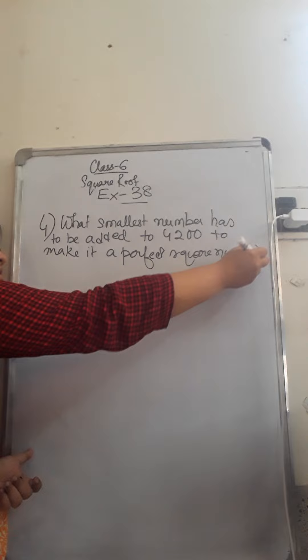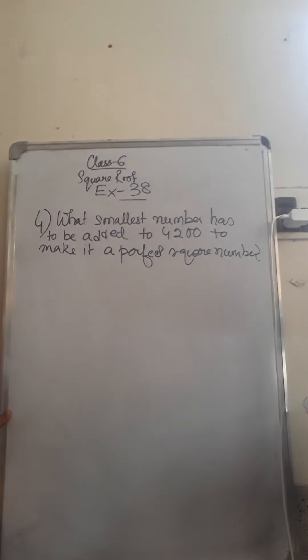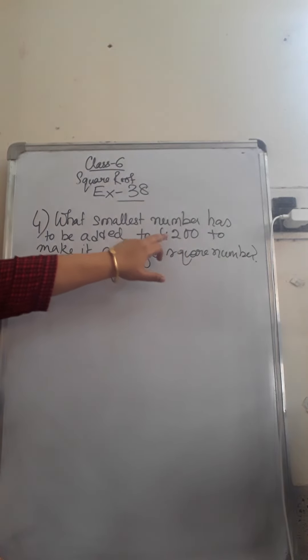So here the question is just opposite than in the previous video. The question over there was what smallest number needs to be subtracted to make the given number perfect square? Here what number has to be added to make the given number perfect square?